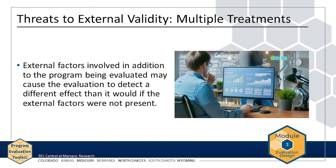Multiple treatments is also a threat to external validity, whereby external factors in addition to the program may cause the evaluation to detect a different effect than it would if the external factors were not present. For instance, perhaps AMP is being implemented in a district where a new math curriculum is also being implemented. In this example, AMP is the program being evaluated, and the new math curriculum is an external factor not associated with AMP. Thus, a combination of the middle school's efforts to implement AMP and the new math curriculum could lead to effects that are not reproducible by either treatment alone.